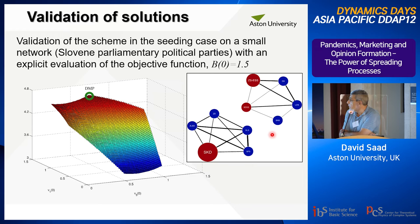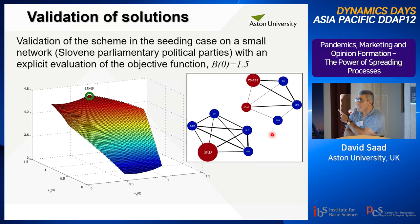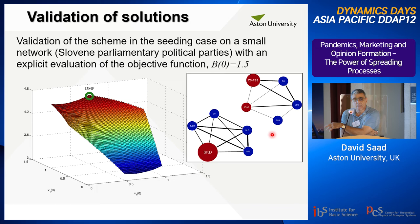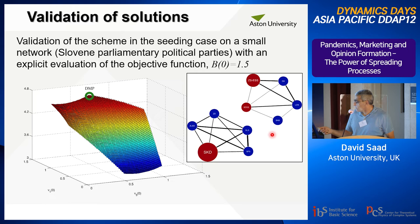We also took the benchmark example of Slovene parliamentary political parties. All of these are political parties, and the thicker the line between them means they are more influential. How to spread your influence as much as possible in this setting? The three red circles are the only ones we have control over. We took a budget of 1.5 and asked how to distribute it between these three groups to maximize the spread of influence after a certain number of time steps. Because three elements sum to 1.5, there are only two degrees of freedom, giving rise to a two-dimensional plot. The DMP solution coincides with the best value — the highest value of the objective function.